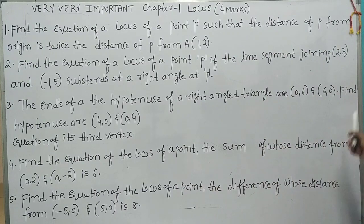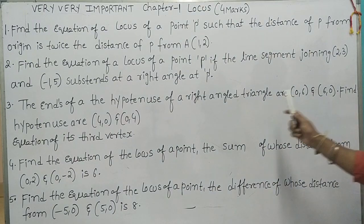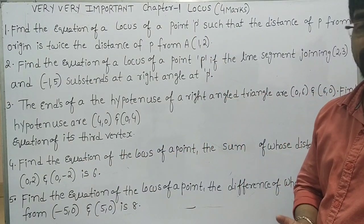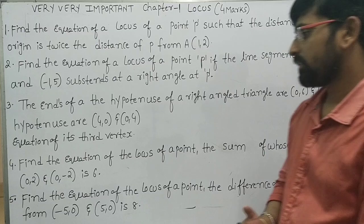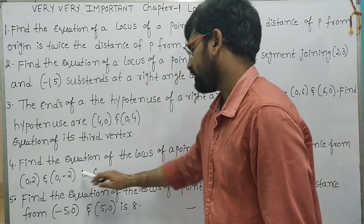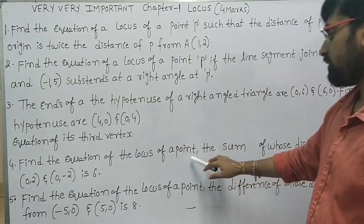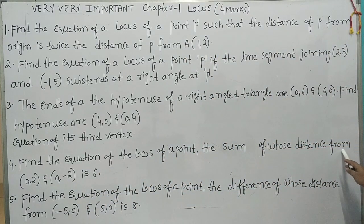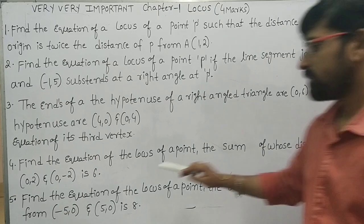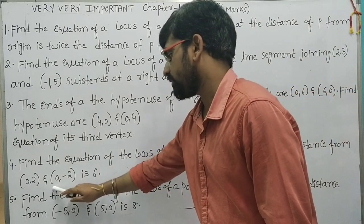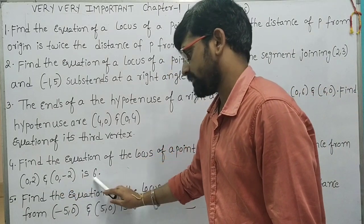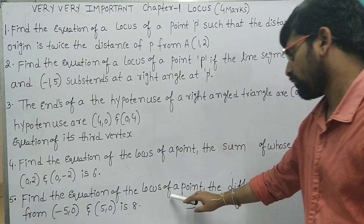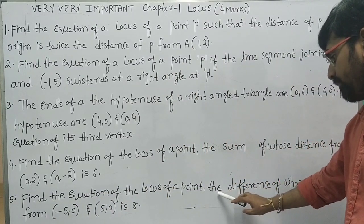Then we need to find the equation of the third vectors. Find the equation of the locus of a point P, the sum of whose distances from (0,2) and other fixed points. The equation of the locus of a point P.